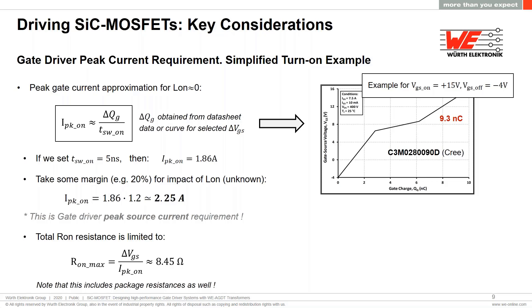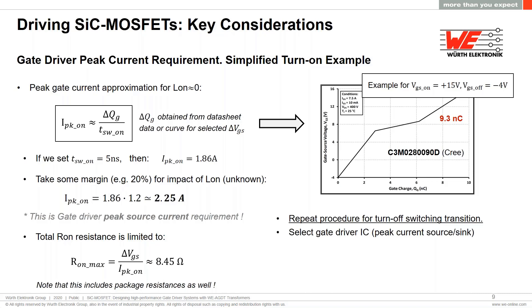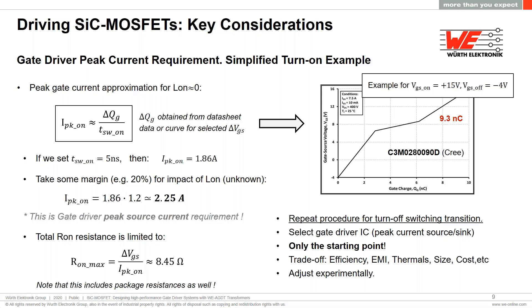This peak current also sets a limit on the maximum turn-on gate resistance, including not only the external resistor but also the parasitic resistances of packages. A similar procedure is repeated for the turn-OFF switching transition to obtain the sink current requirement of the gate driver IC. We can then look for a gate driver IC with the required driving strength. Keep in mind this is a starting point only — we need to validate experimentally and find a trade-off considering efficiency, EMI performance, thermals, cost, and size.